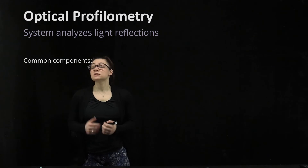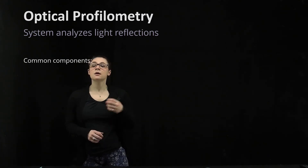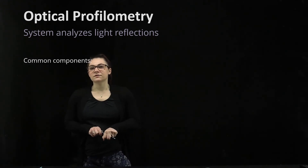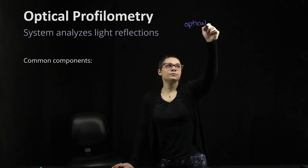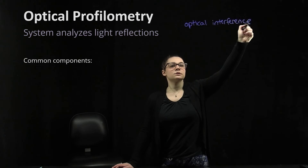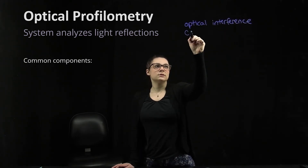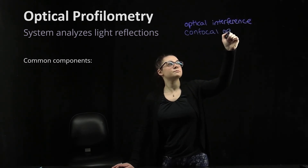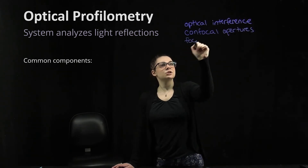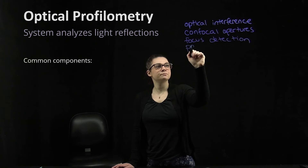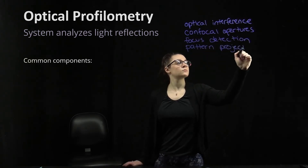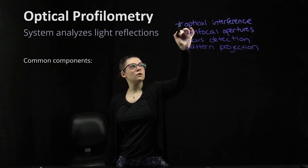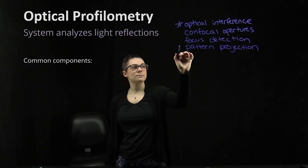Optical profilometry is non-contact. This system analyzes light reflections in order to get the topography. There are a couple of different methods: you could use optical interference, confocal apertures, focus detection, or pattern projection. In the MMCL, we have profilometers that use the optical interference method as well as the pattern projection method.